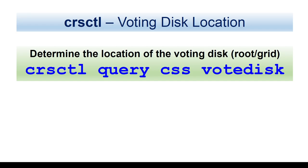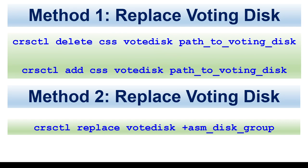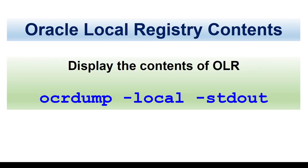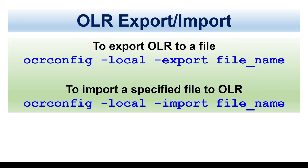For the voting disk — if you want to look at the voting disk, you can use CRSCTL query CSS votedisk. If you want to replace it, there are two options: delete and add, or replace. You can replace the voting disk with the new voting disk. If you want to check the contents of OLR, you can use OCR dump -local -hd out, which will show the OLR contents on your screen.